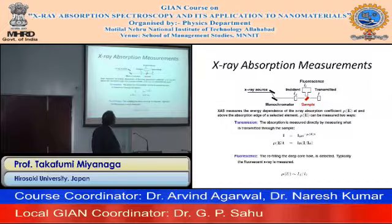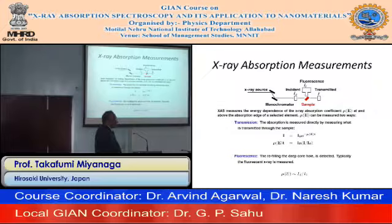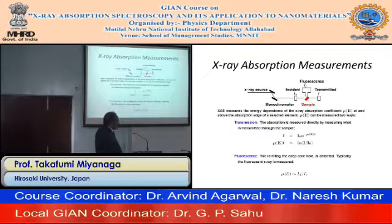The X-ray absorption measurement mechanism is very simple. There is an X-ray source, then the monochromator, and the incident X-rays are identified as I₀. Through the sample, X-rays can be transmitted in two manners: the transmitted beam recorded as I, and the fluorescence beam reflected from the sample, identified as I_f. I = I₀ · e^(−μt), and μ = log(I/I₀). Fluorescence is the refilling of the deep core hole and is measured as I_f/I₀ versus μ.